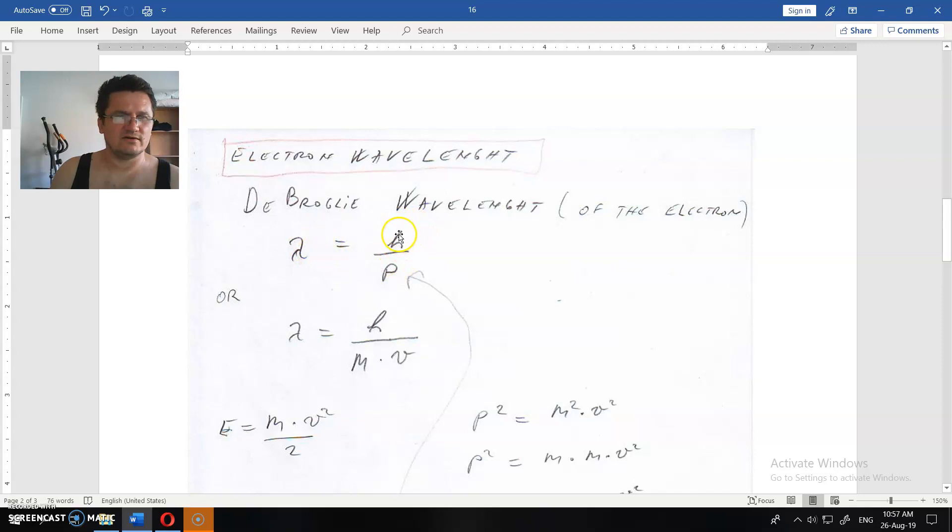This is the wavelength. This is the Planck constant. This is the momentum of the object. This means that this eraser and this pen and me and this building have a wavelength. Yes, but because these momentums are larger and Planck constant is small, so this wavelength in meters is very small for a large object, so we cannot detect that.